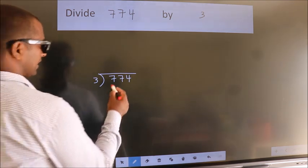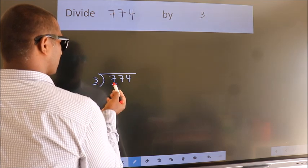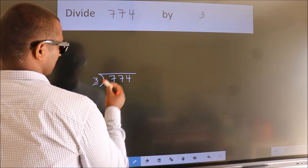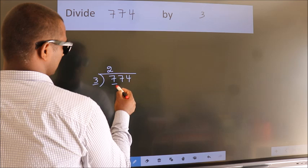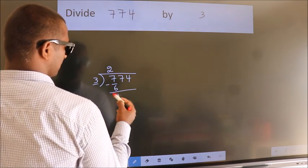Here we have 7, here 3. A number close to 7 in 3 table is 3 twos, 6. Now, we should subtract. We get 1.